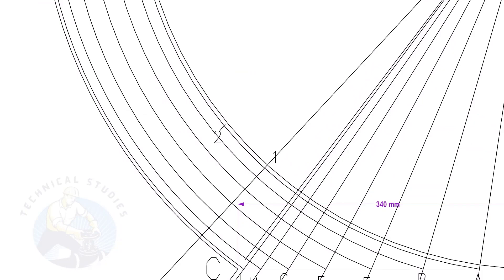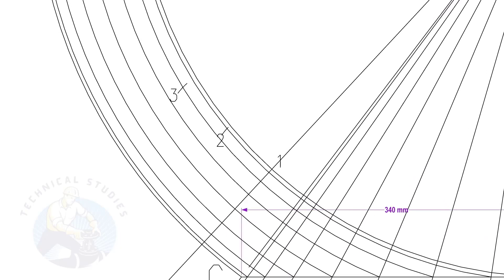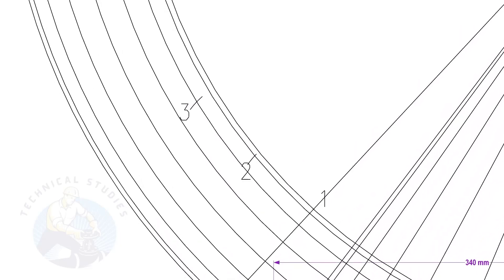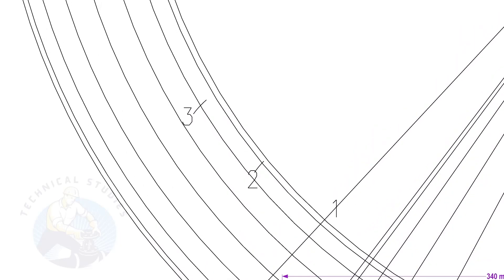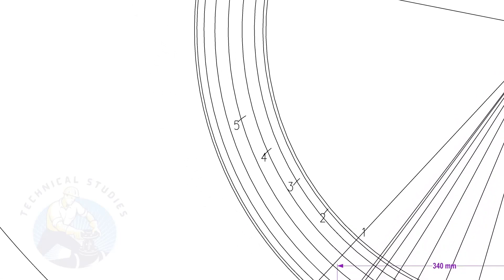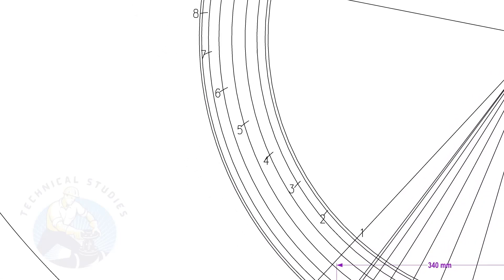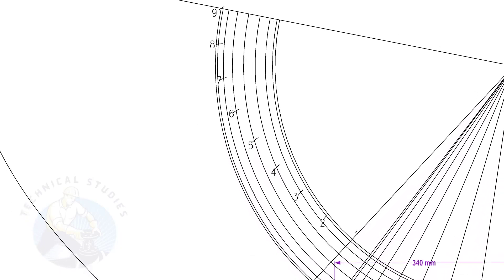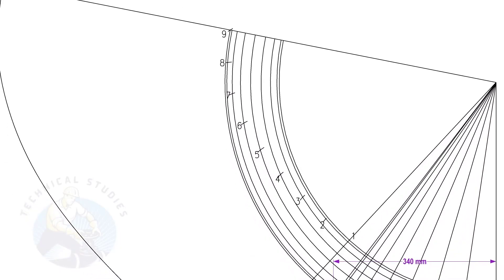Draw arcs as done previously for the top portion. Draw lines connecting these marks. Now we have the half layout of the cone. I suggest making a template of this layout and marking the other side, or you can complete the layout by repeating the same method.